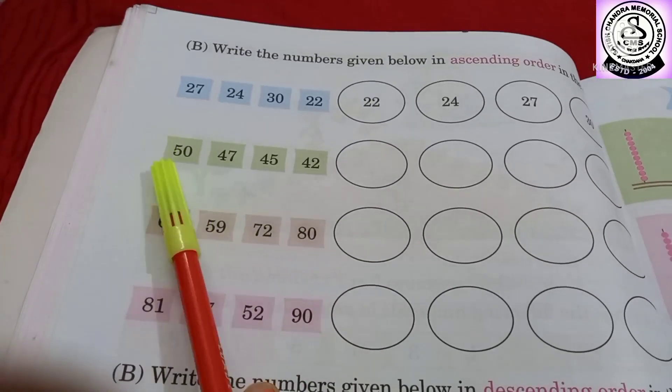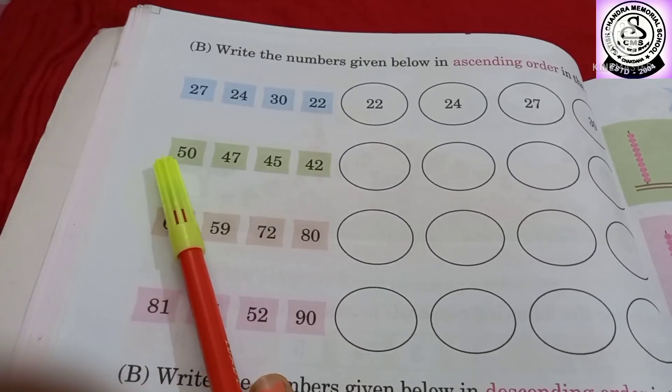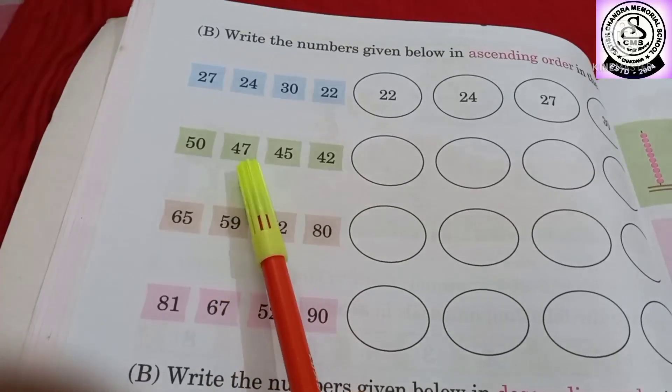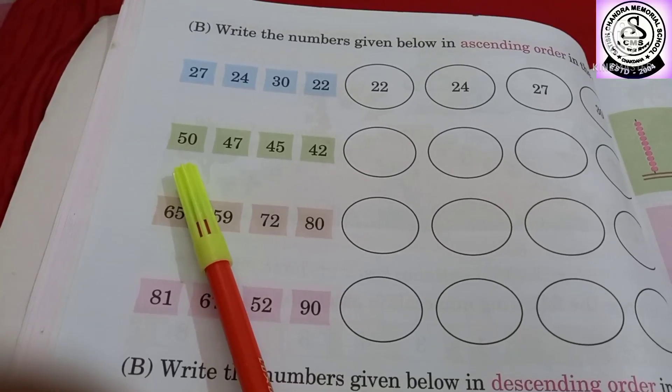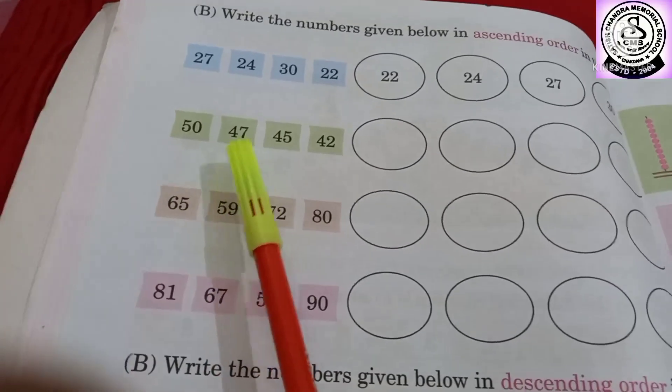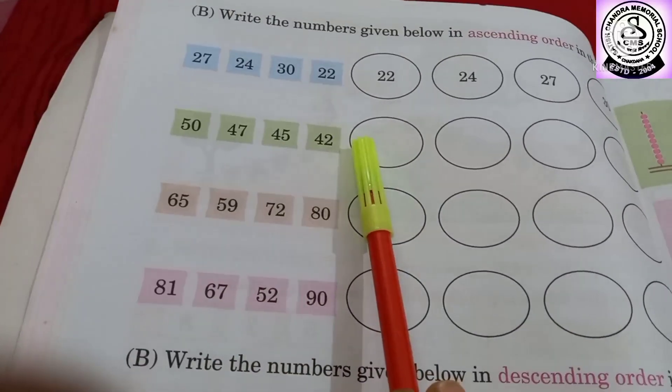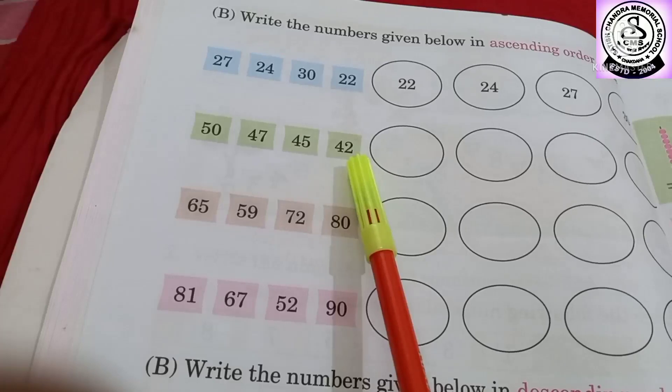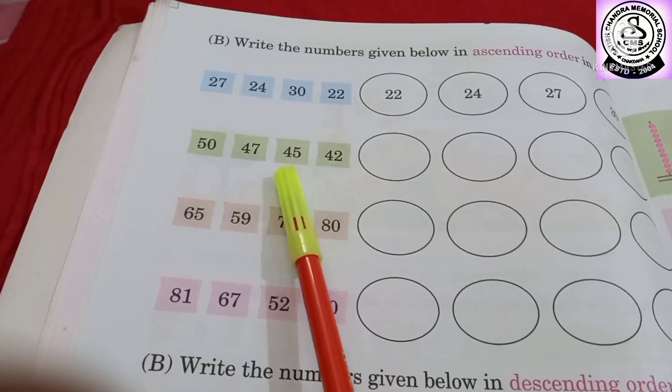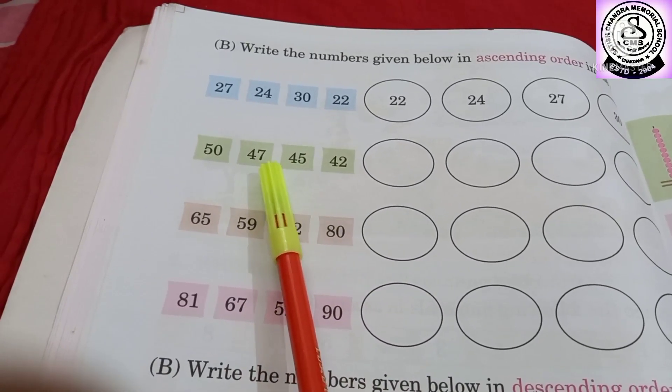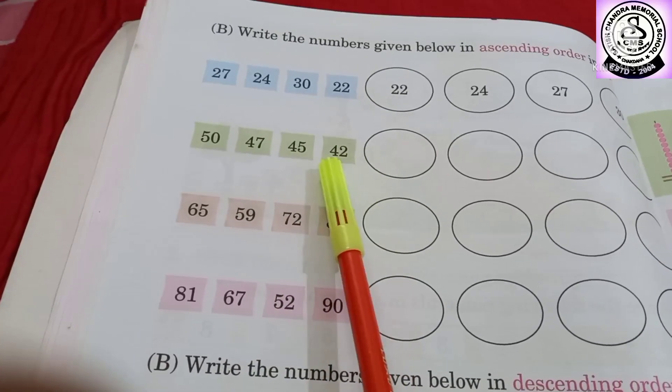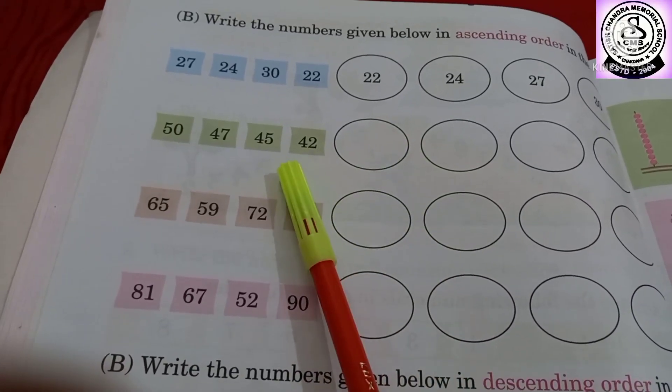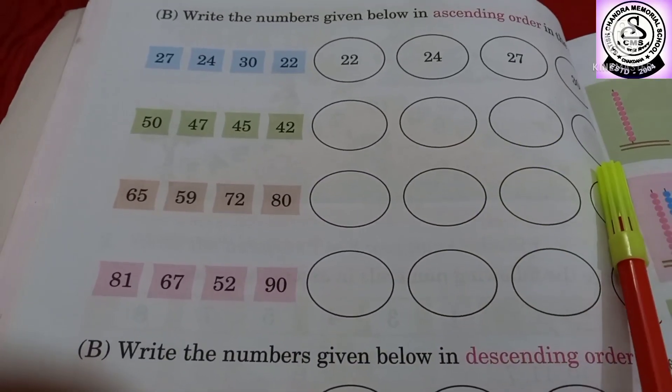So your first digit is 5. Here 4, 4 and 4. So obviously 4 is smaller than 5. That means you have to compare in one's place number. So here in one's place 2, then 5 and then 7. So 2 is smaller than 5 and 7. That means you have to write here 42, then 45, then 47, then 50.